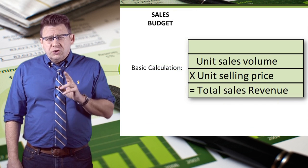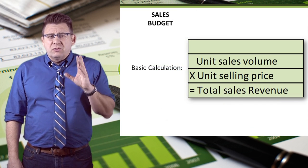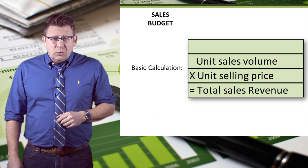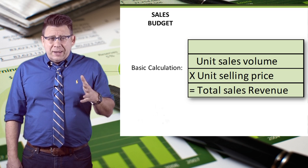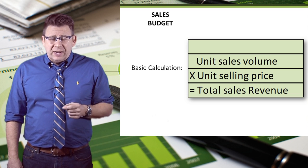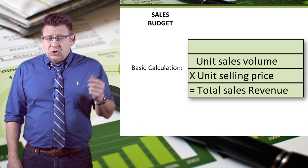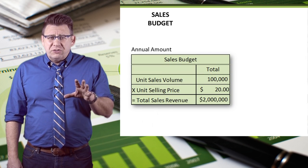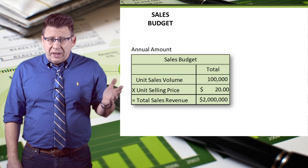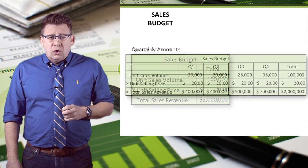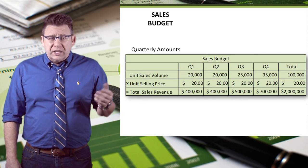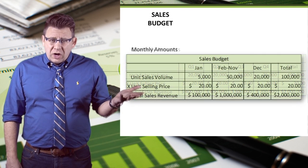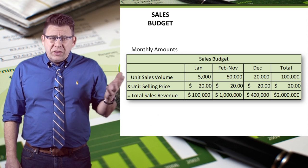In order to create a sales budget, we start with the most basic calculation, which is sales units times selling price equals total sales revenue. A sales budget can be created for an annual amount, quarterly amounts, or more commonly, monthly amounts.